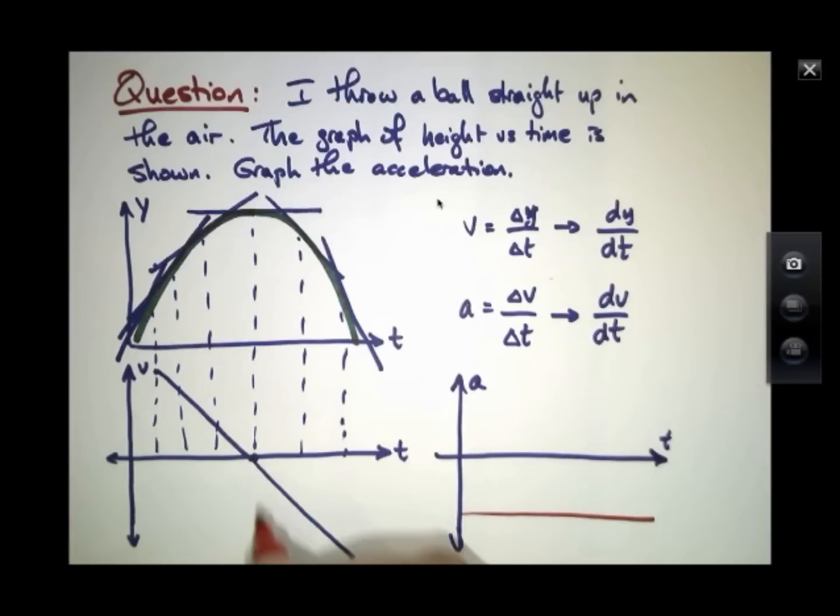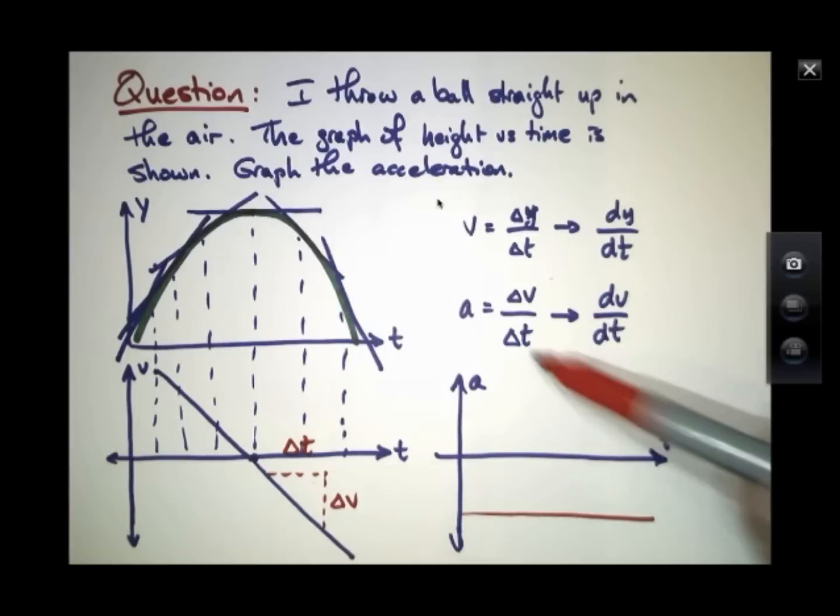How do I know that? Because at any point along this velocity curve, I can pick a time interval. Here's a delta v. Here's a delta t. Delta v is negative. The velocity is dropping all the time for every delta t. So if this is negative and that's positive, then the acceleration is negative.